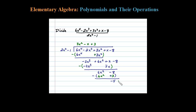That negative 5 is the remainder. What you have to do is add your remainder as a fraction where the denominator is the divisor, 2x squared minus 1. So when you divide these two polynomials, you're left with 3x squared minus x plus 3, minus 5 over 2x squared minus 1.